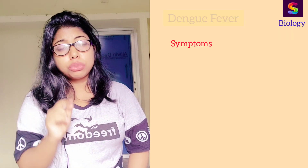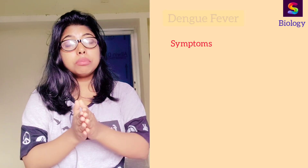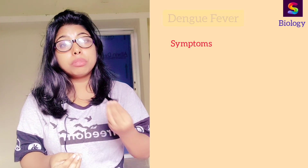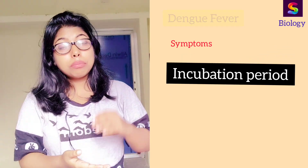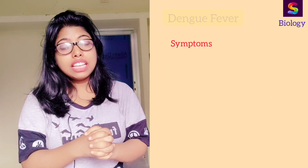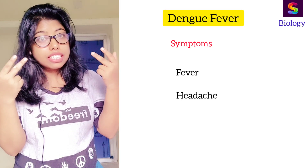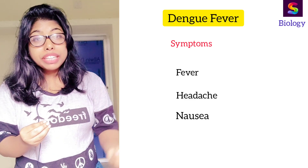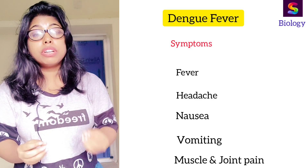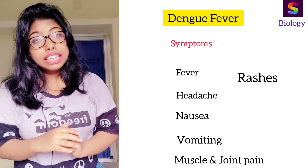Now we will discuss the symptoms, so that you know when to visit a doctor for testing. First, the incubation period — the time between exposure to the virus and the onset of symptoms — is between three to fourteen days, but most often four to seven days. Symptoms include fever, headache especially located behind the eyes, nausea, vomiting, muscle and joint pain, and a rash similar to that of measles.